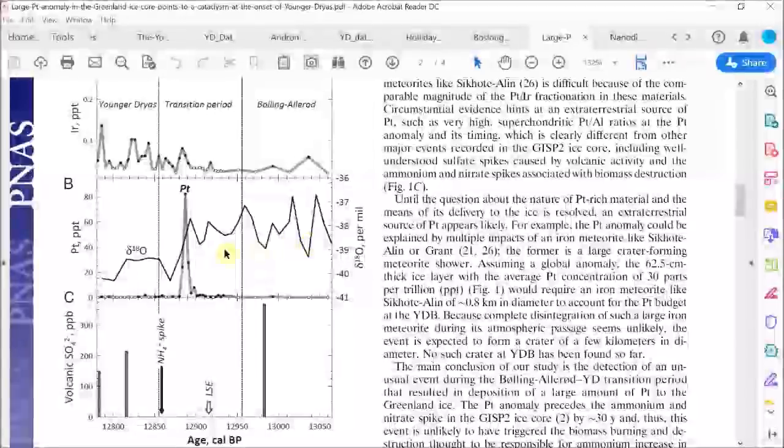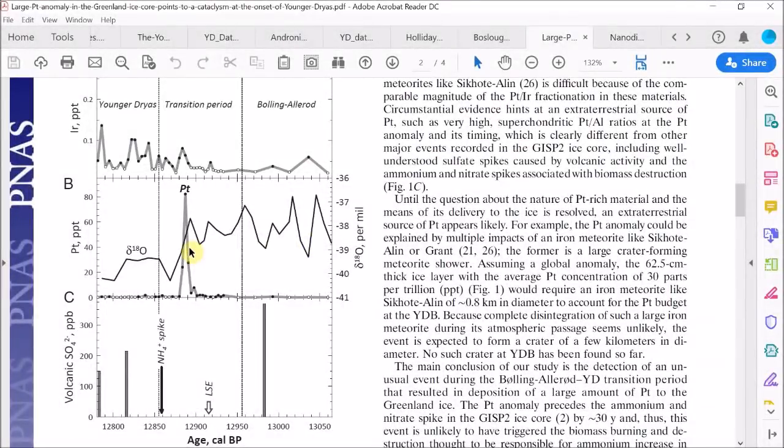So far the evidence we have seen very strongly supports their claims. The platinum spike in the Greenland ice is especially important because its timing is so close to the onset of the Younger Dryas cooling within the resolution that can be achieved with ice cores, so there seems little doubt they are correct.